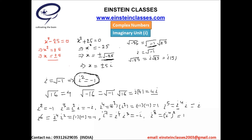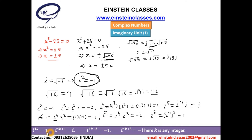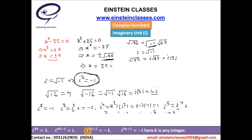From these examples, we can write down the cyclic property of the imaginary unit i. i to the power 4k equals 1, where k is some integer. i to the power 4k plus 1 equals i, since i to the 4k equals 1. i to the power 4k plus 2 equals minus 1, since i to the 4k equals 1 and i squared equals minus one. i to the power 4k plus 3 equals minus i, since i to the 4k equals 1 and i cubed equals minus i. This is the cyclic property of the imaginary unit i.